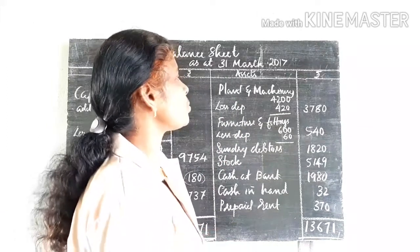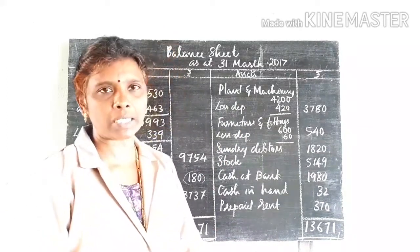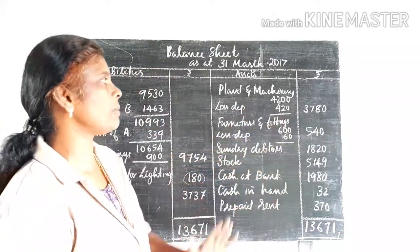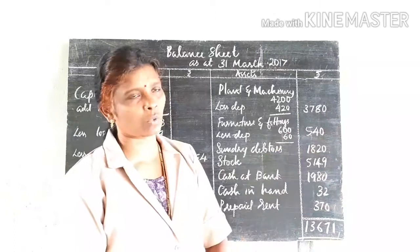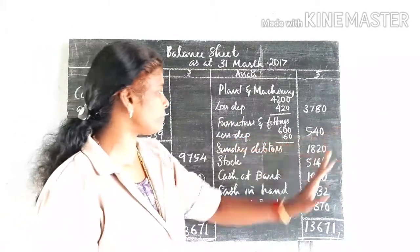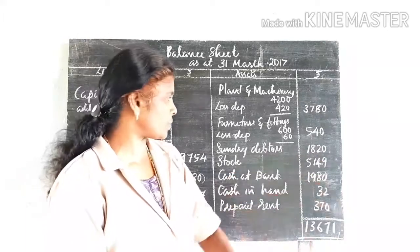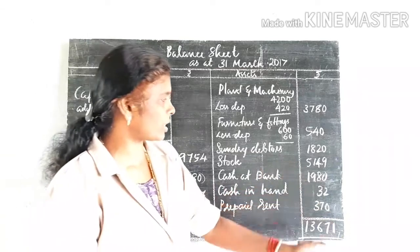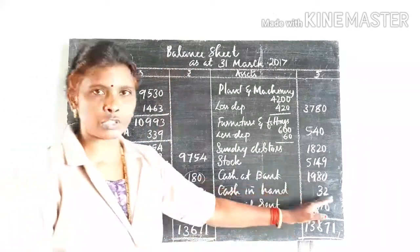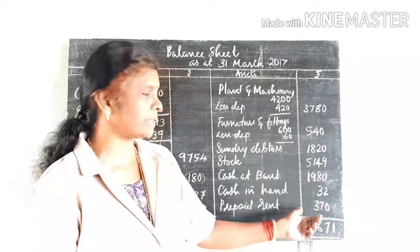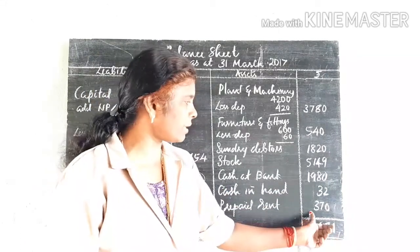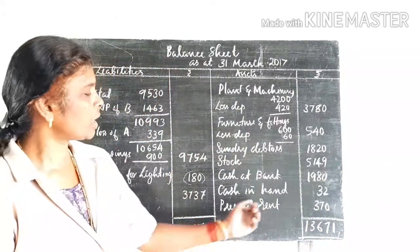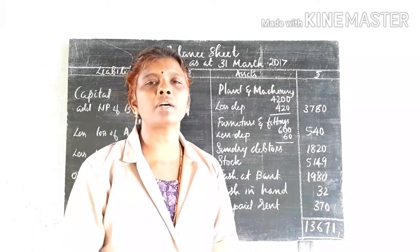On the assets side: plant and machinery 4,200 rupees less depreciation 420 rupees equals 3,780 rupees. Furniture less depreciation: 540 rupees. Sundry debtors: 1,820 rupees. Stock: 5,149 rupees. Cash at bank: 1,980 rupees. Cash in hand: 32 rupees. Prepaid rent: 370 rupees. Balance sheet total: 13,671 rupees.